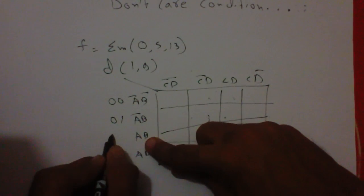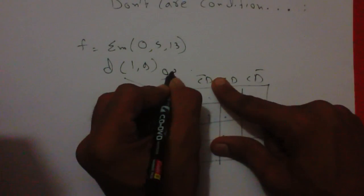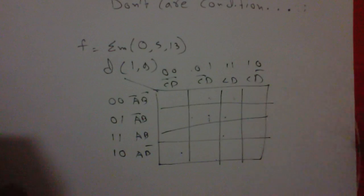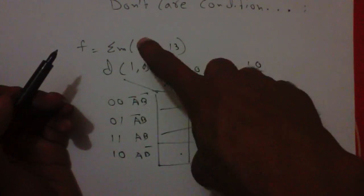So this is 00, 01, 11, 10, 00, 01, 11, 10.